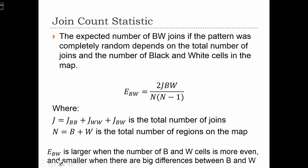The expected number of black-white joins, if the pattern were completely random, depends on the total number of joins J, and the number of black and white cells in the map. Capital B is the number of black cells, capital W is the number of white cells, and N is the total number of regions on the map, so N equals B plus W.